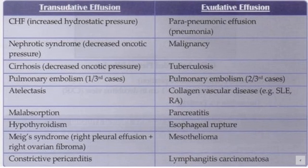Transudative effusion is due to systemic factors and involves lungs bilaterally. The systemic causes include congestive heart failure, nephrotic syndrome, cirrhosis, pulmonary embolism, atelectasis, malabsorption, hypothyroidism, Meigs syndrome — which is right ovarian fibroma associated with right pleural effusion — and constrictive pericarditis.